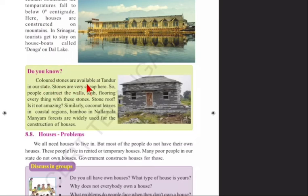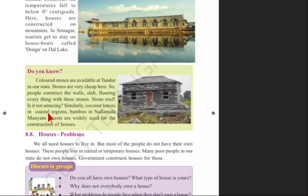Colored houses are available at Thandur in our state. Stones are very cheap here, so people construct walls, slabs, flooring — everything with these stones, including stone roofs. Similarly, coconut leaves are used in coastal regions, and bamboo in Nalamalam and Mayam forests is widely used for the construction of houses.